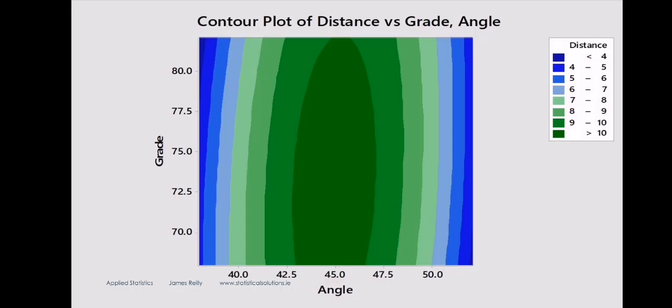Here we show a ridge. You can see from the contour plot that the optimum angle seems to be 45 degrees. And when you go below 45 or above 45, the response, the distance travelled by the paper airplane rises to a peak at 45 and then falls again, and that seems to happen for every grade of paper.